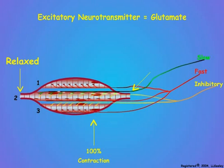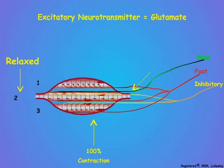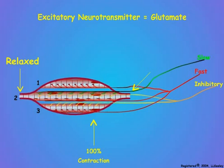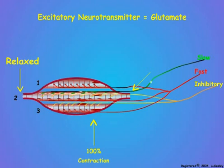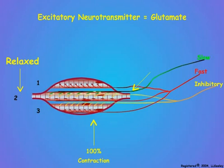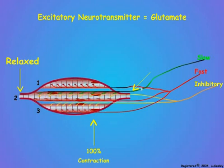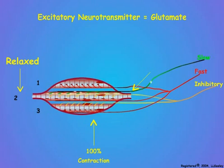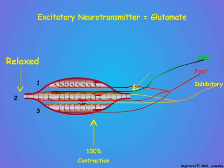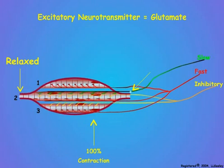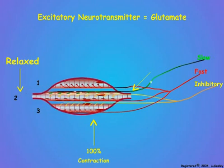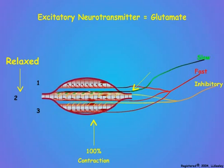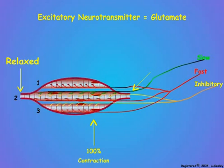Note that since only one muscle fiber in our muscle unit has slow innervation, not only is the contraction rate of the entire muscle slow and graded in response to stimulation by the slow neuron, but the overall maximum contraction of the entire muscle is only about one-third of that observed for stimulation by the fast neuron.